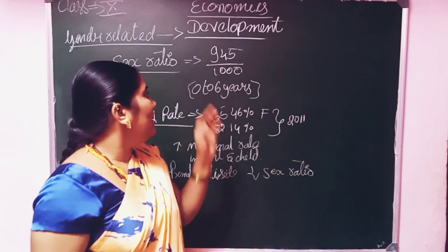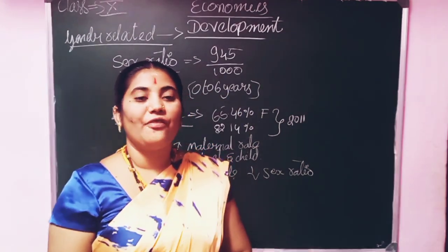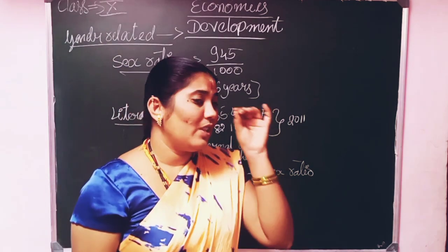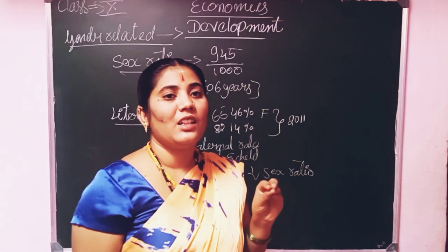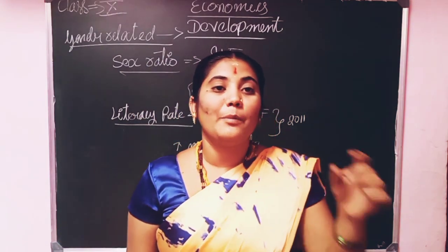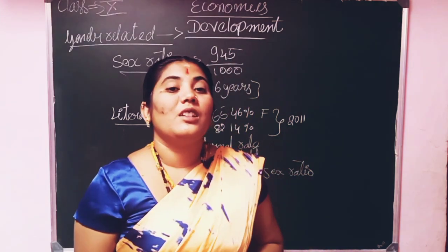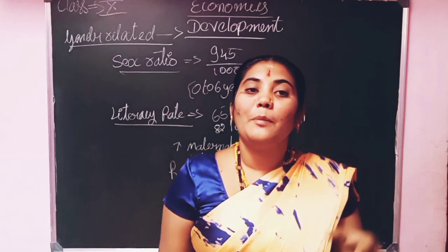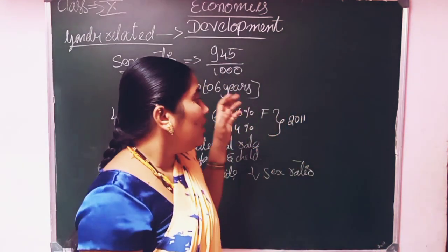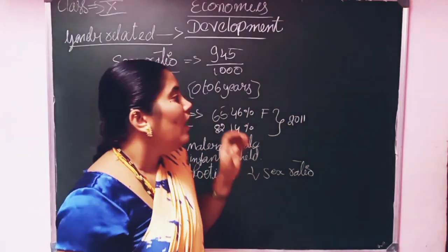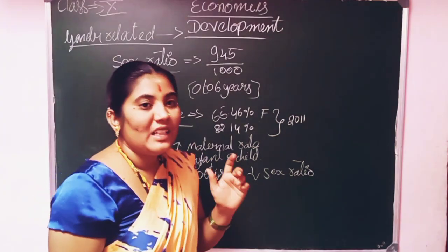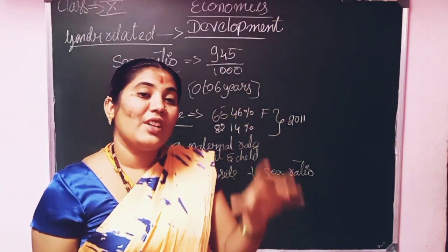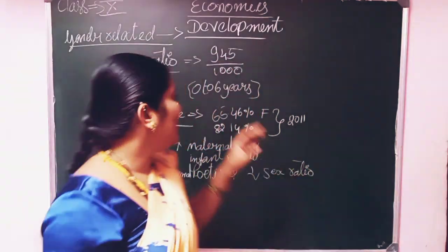In the 0 to 6 years age group, the female ratio is very worst. The sex ratio for children in this age group is very poor. The reasons are female feticide and female infanticide. Killing the girl baby after birth for various causes is called female infanticide. Killing the girl baby in the womb is called female feticide. These are the cause for the low sex ratio. The 0 to 6 years female ratio being very low is the worst — these data show what treatment we are giving women in our country. This is all about the sex ratio.